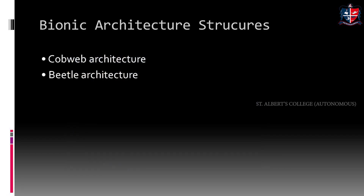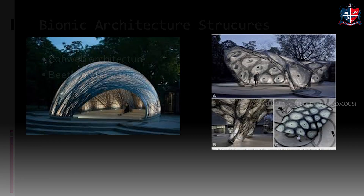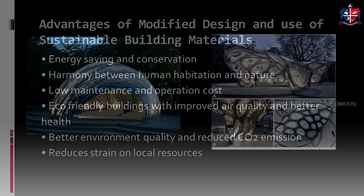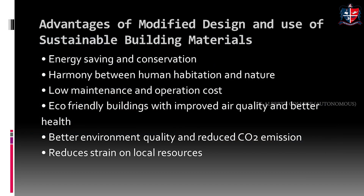Next are bionic architecture structures. Two examples shown include a structure inspired from the cobweb — the spider's web — and a second example which is a beetle-type architecture.